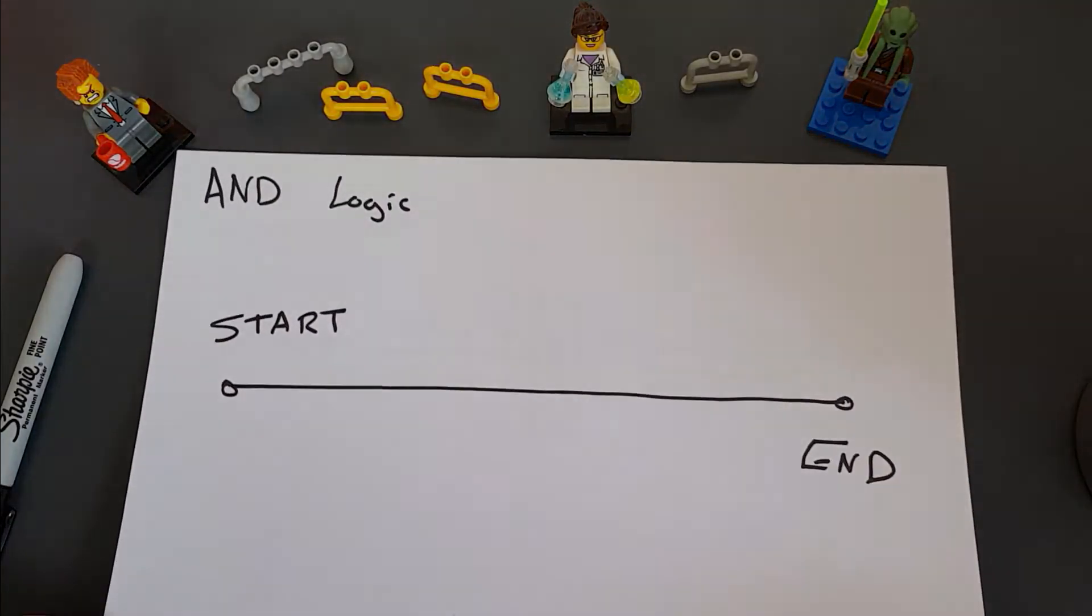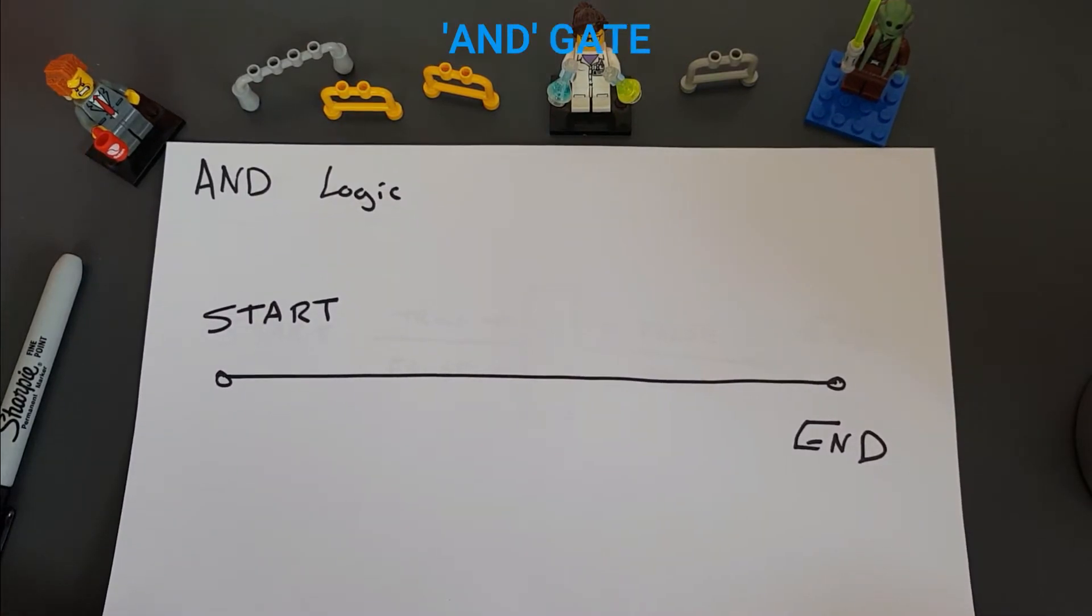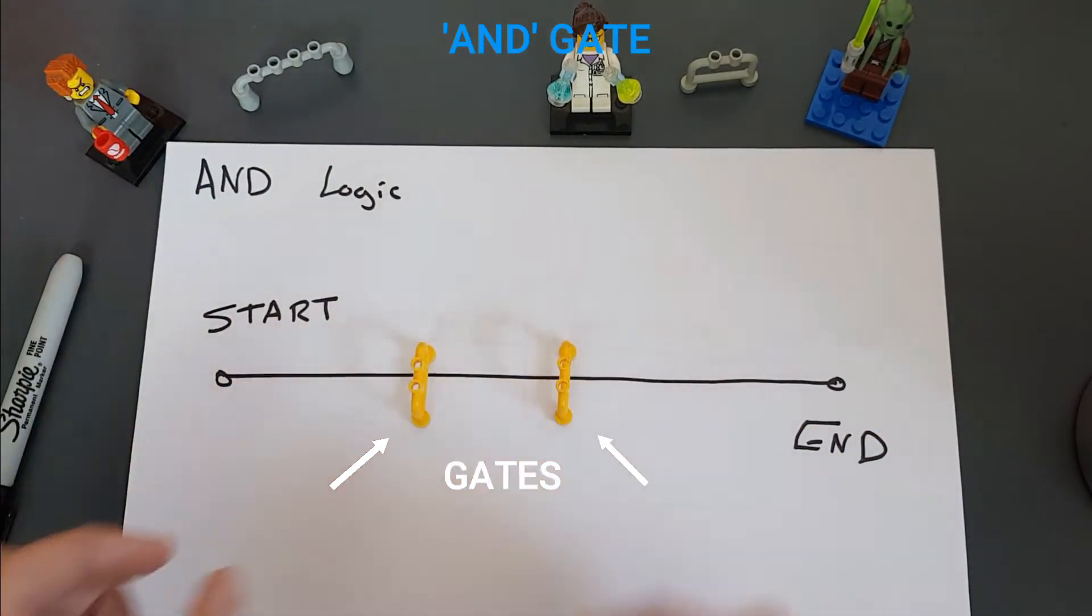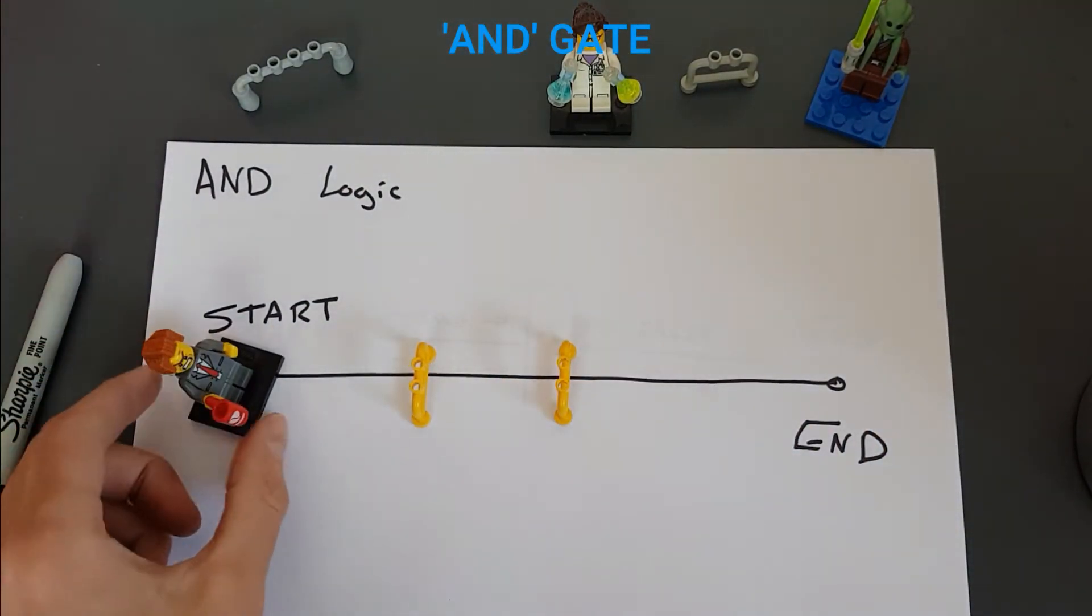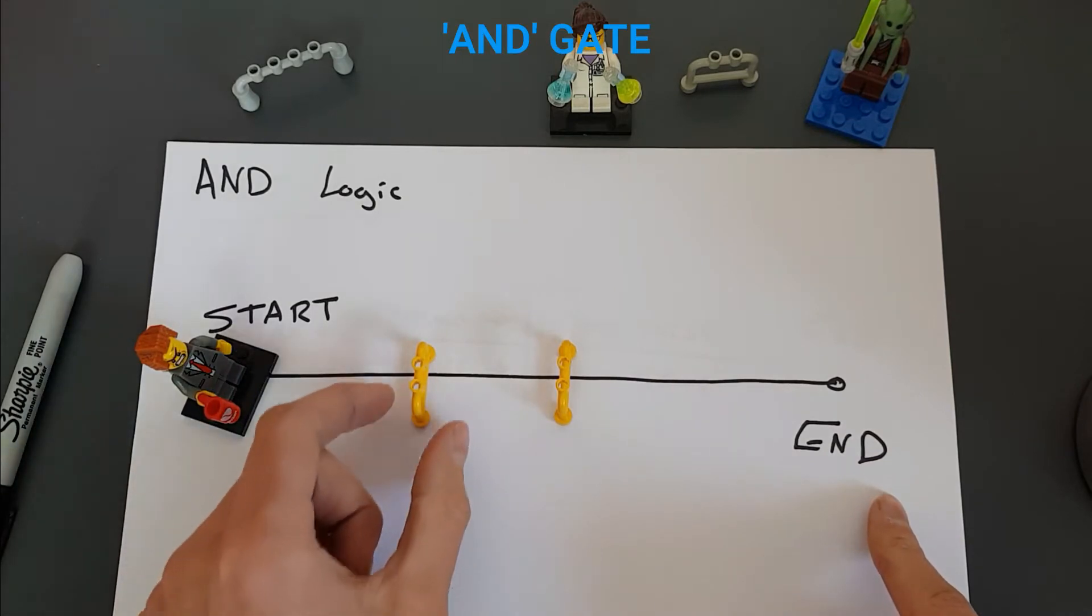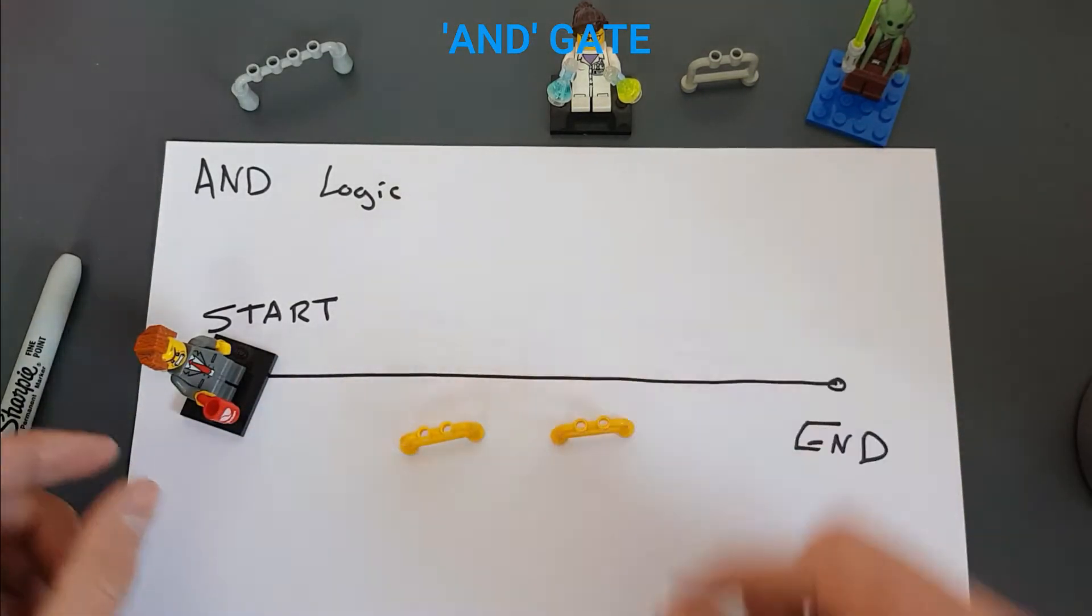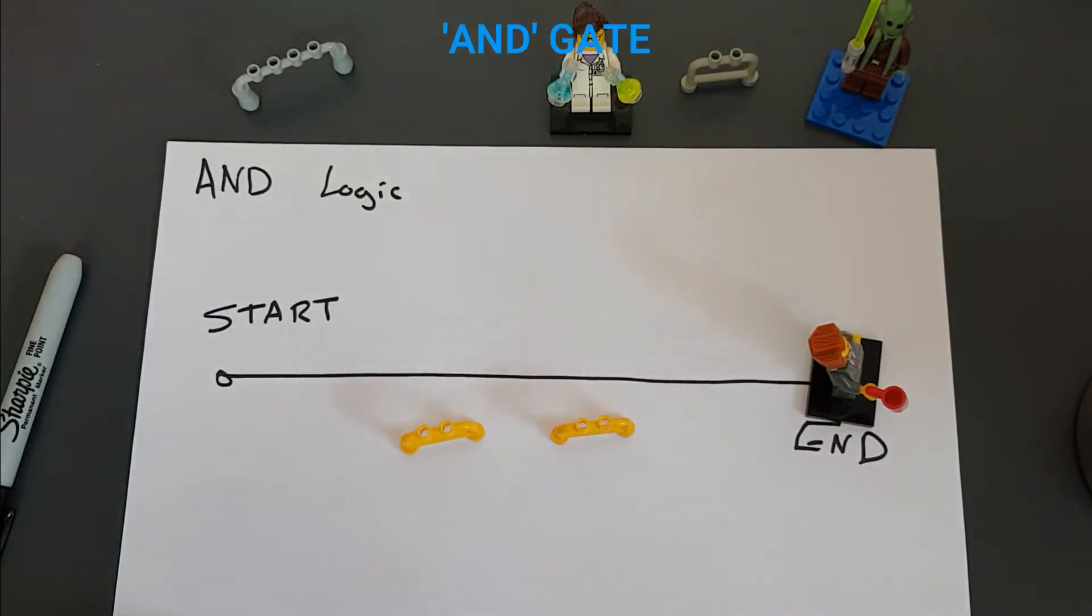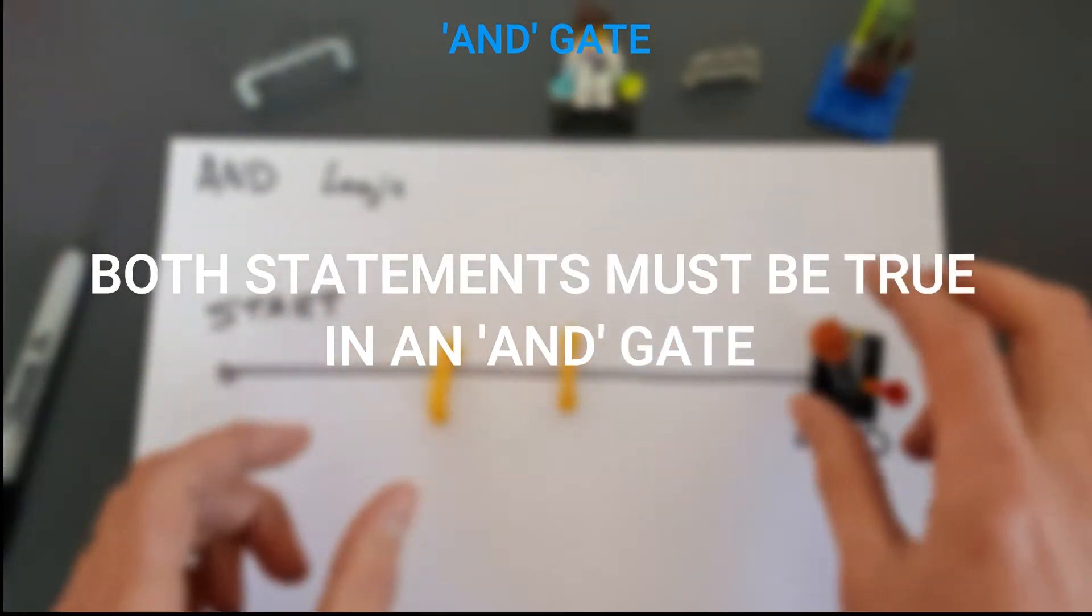So our AND gate is pretty simple. This AND that must be true for us to go down that path. So we can simulate this by using some gates over here, and President Business starting at the start. President Business wants to go from start to end. The AND logic says that both of these gates need to be open for him to get from the one side to the other. Right, so both gates need to be open, both need to be true.